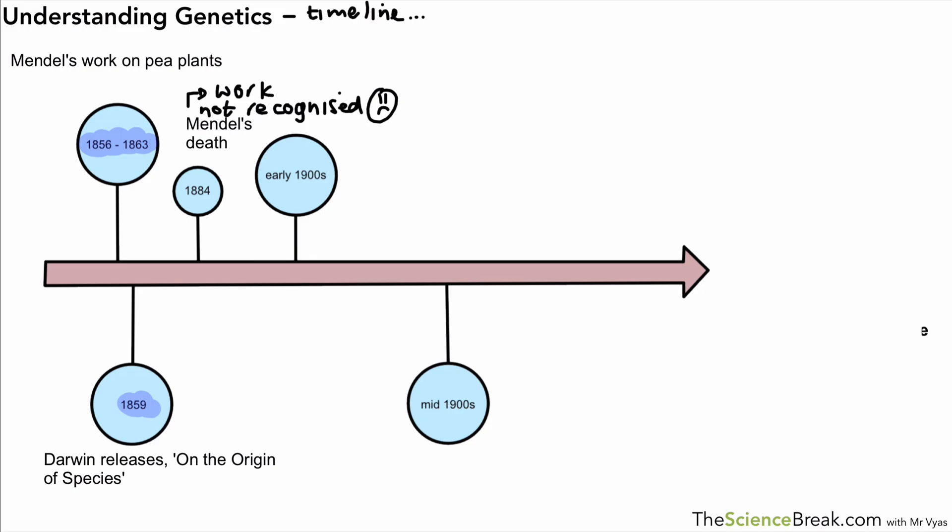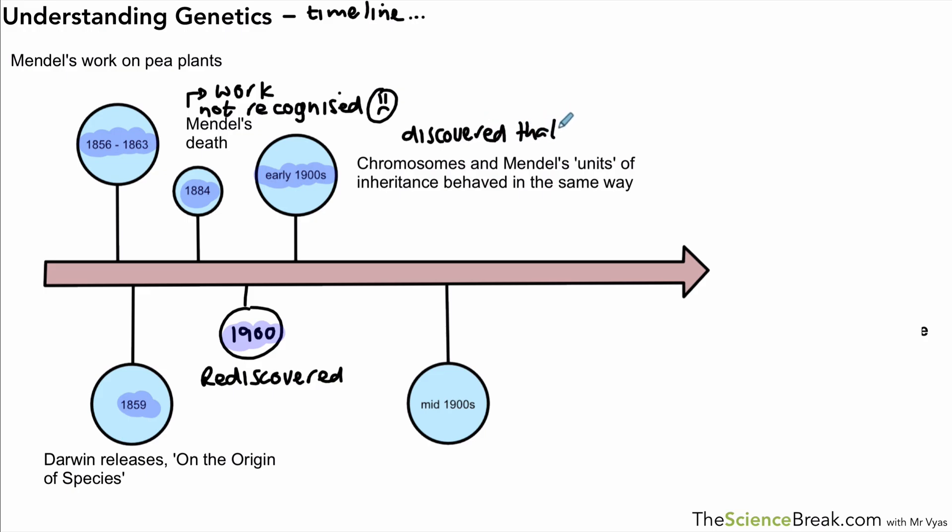We could actually add another part of this timeline. His work eventually was rediscovered, but it wasn't too long afterwards. In about 1900, his work was rediscovered simultaneously at the same time by three other scientists, and that's when it kind of started gaining some recognition, around about 1900s. There was other work done as well, so in the early 1900s, we have the development or the discovery of chromosomes, and Mendel's units of inheritance seemed to behave in the same way that chromosomes behaved. So this was further evidence that he was correcting his conclusions. It was discovered that these chromosomes behaved in the same way as the units, and of course, as we said before, we know that those units were actually genes.